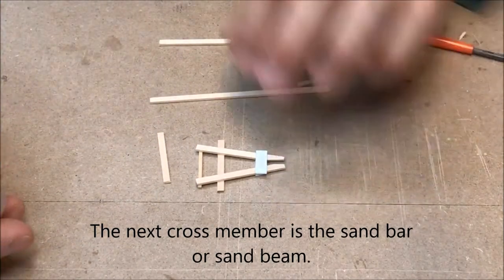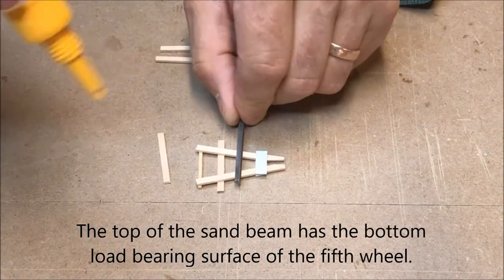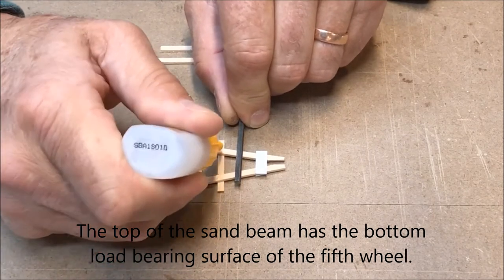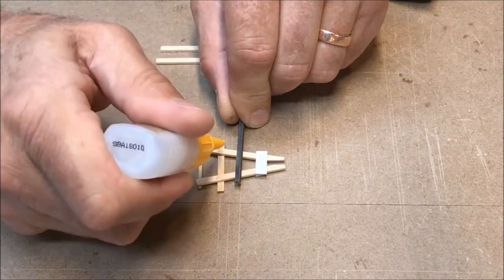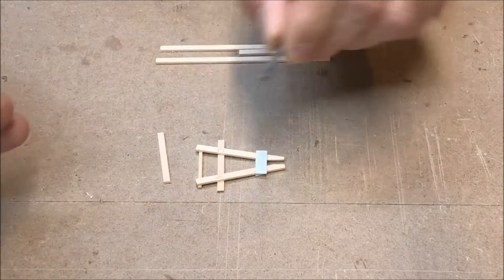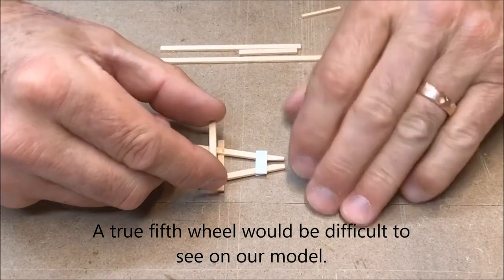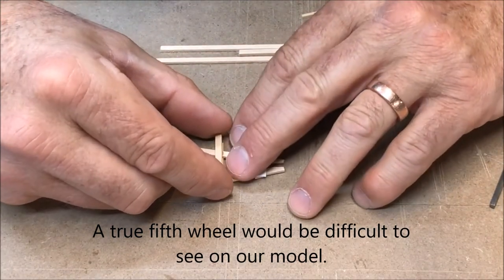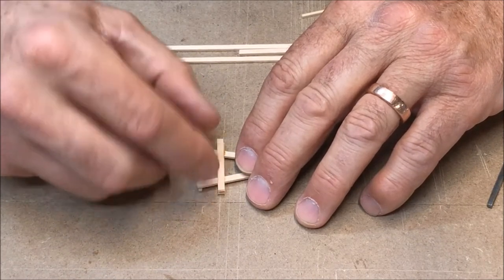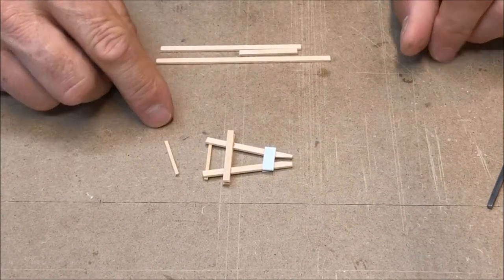The next five foot section, some of the references I've seen call this the sand beam and this is in a construction that doesn't have a true fifth wheel, it's just got a king pin. So again I'll just get this centered directly above the axle beam or axle cap.